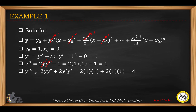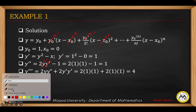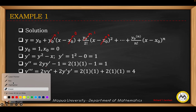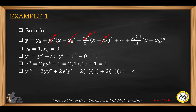Now we get the third-order derivative. We apply the product rule: copy 2y, then derivative of y prime is y double prime; plus copy y double prime, then derivative of 2y is 2 times y prime. The derivative of minus 1 is 0. Substituting the values: 2 times 1 times 1, plus 1 times 2 times 1, gives us 4. So y triple prime at the initial values equals 4.